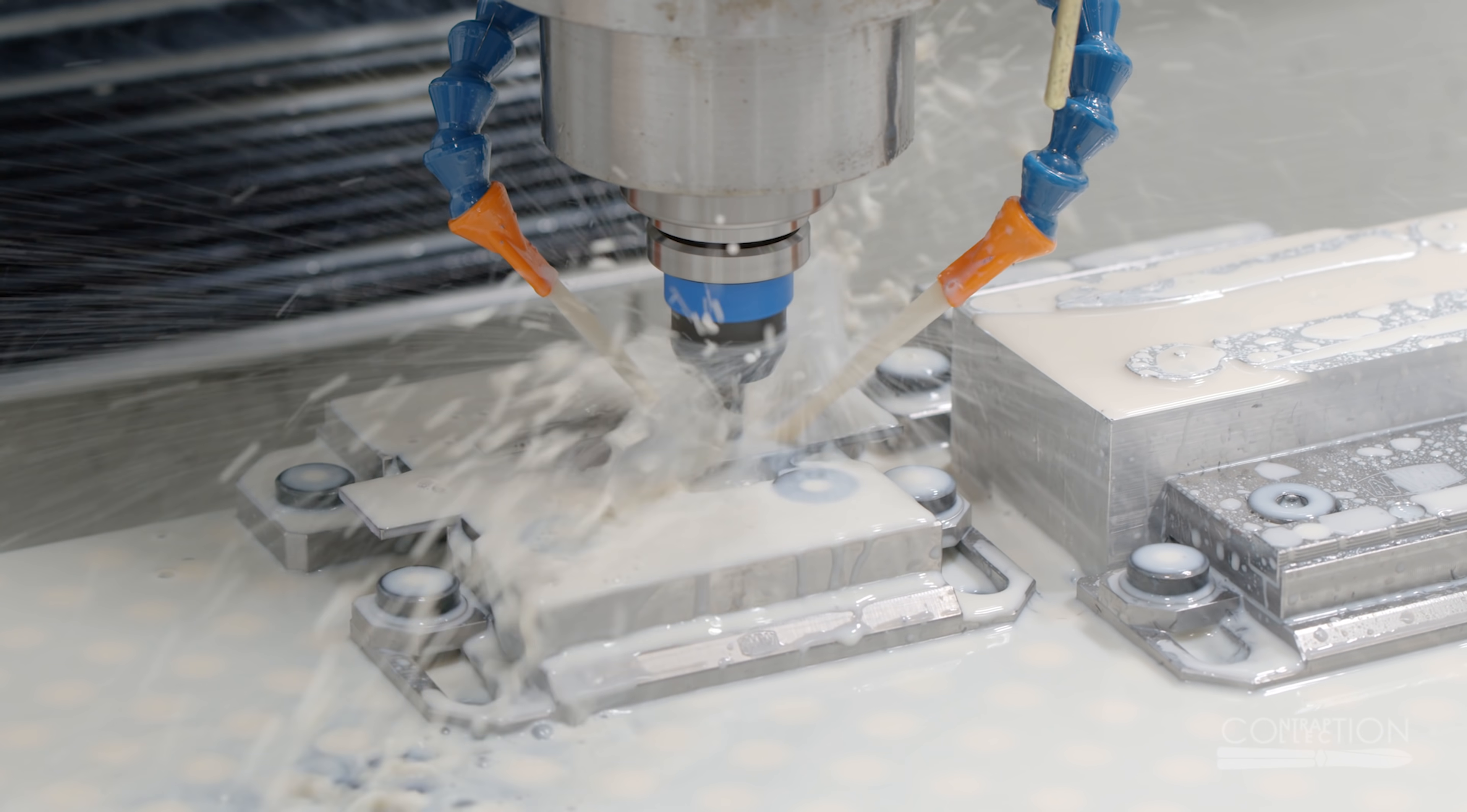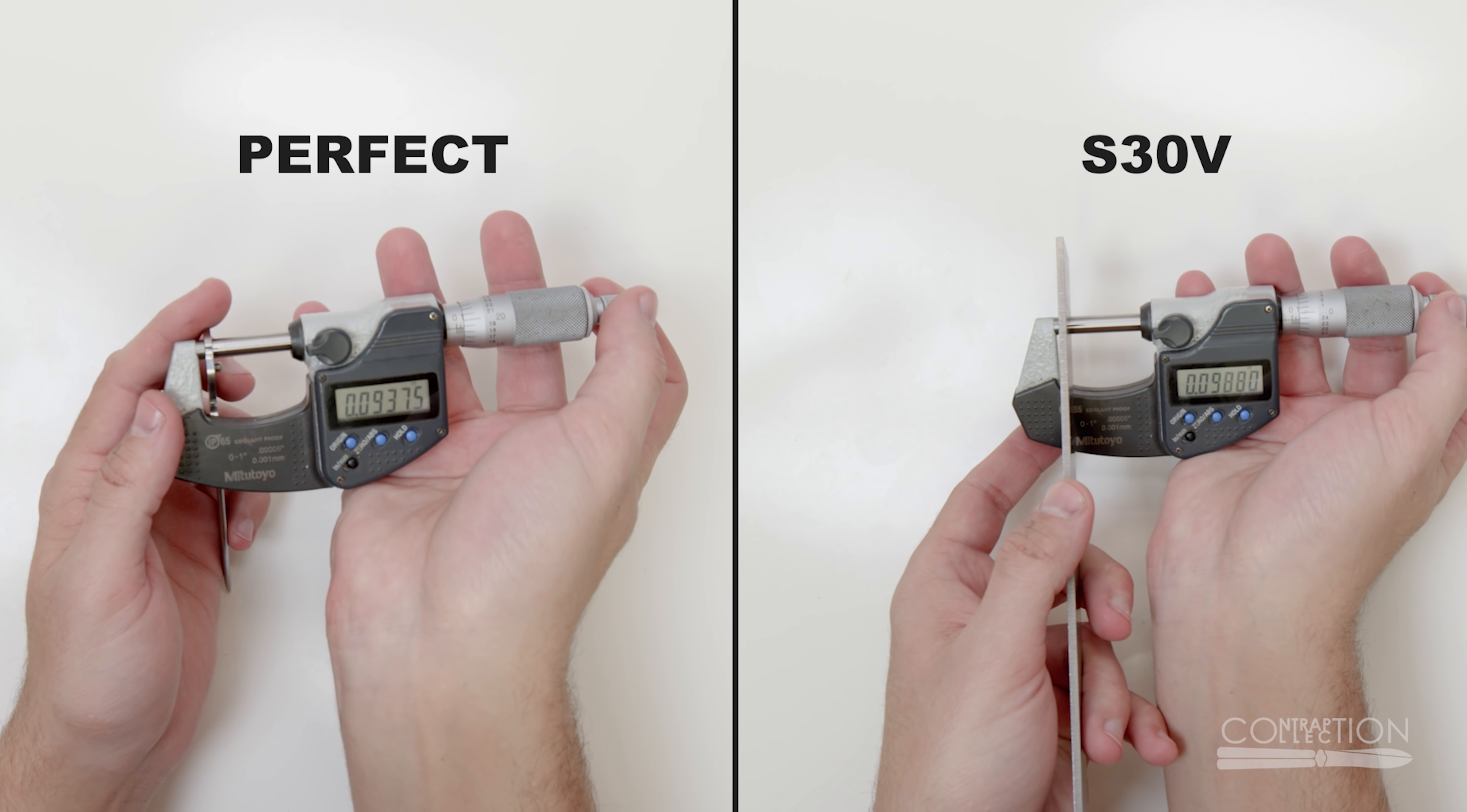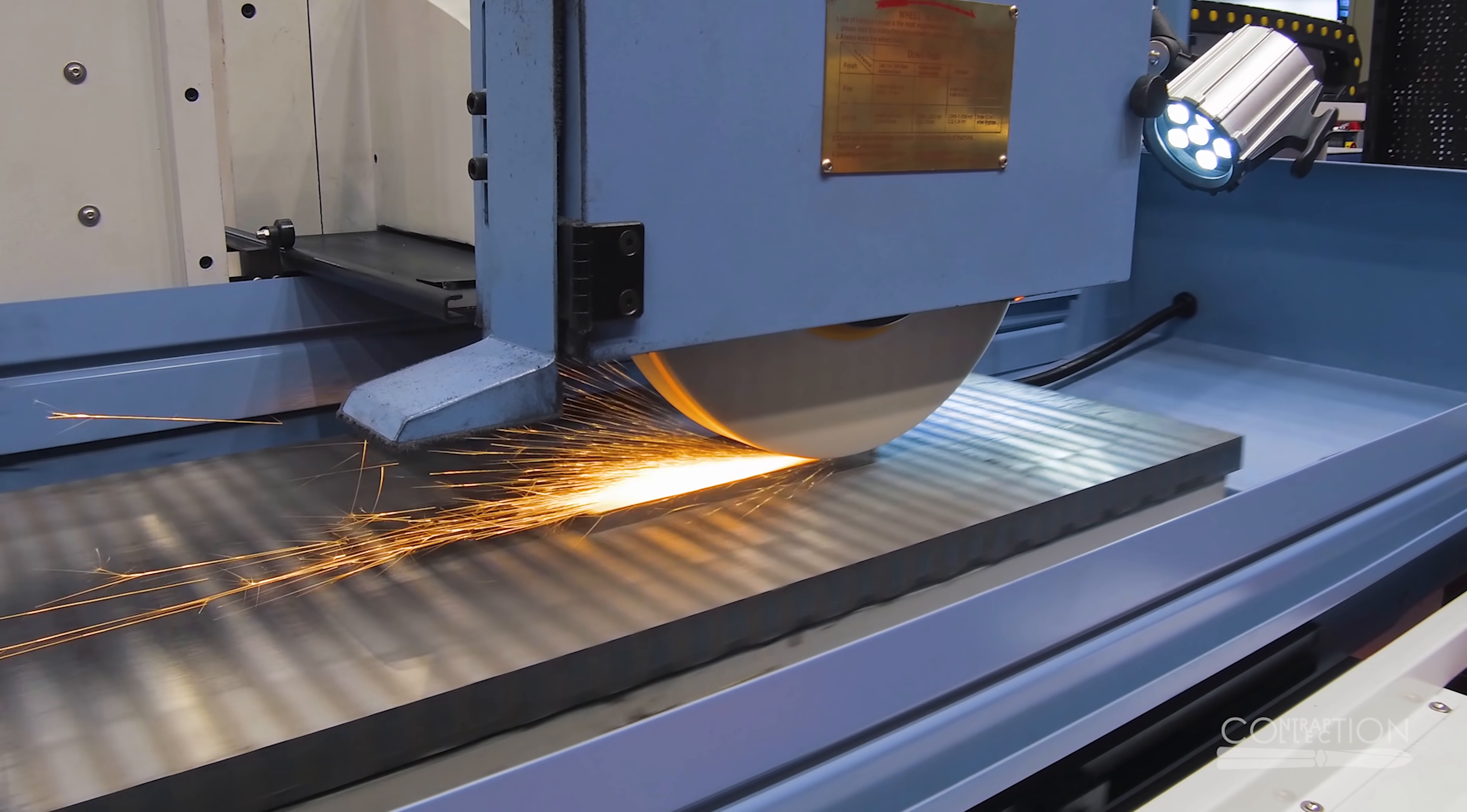I start by facing the stock. I didn't have to do that with the test pieces, but this S30V is more oversized. I still need a surface grinder to get them to size, or find someone to do it for me.